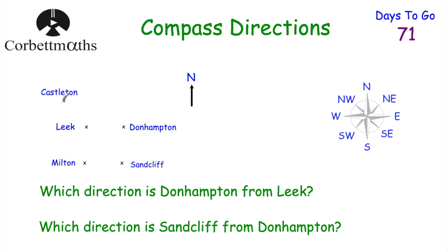Here we've got a diagram with Castleton, Leake, Donhampton, Milton, and Sandcliffe. The first question says: which direction is Donhampton from Leake? So from Leake, what direction is Donhampton? Feel free to press pause and try this yourself. If you're at Leake, you've got north, east, south, and west — and Donhampton is to the east. So the answer is east.